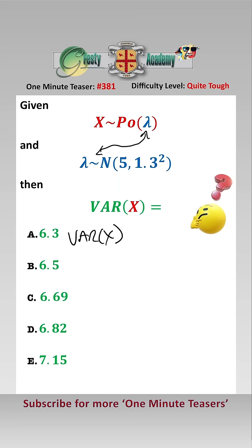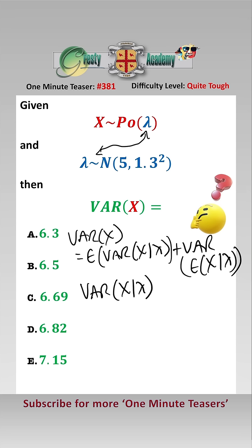VAR(X) is equal to E(VAR(X|λ)) plus VAR(E(X|λ)). Now VAR(X|λ) is just equal to λ because X is a Poisson distribution.